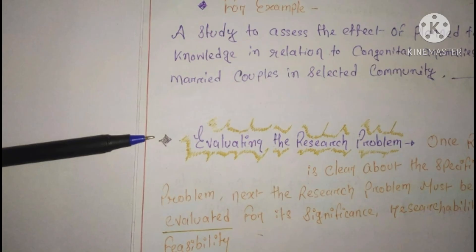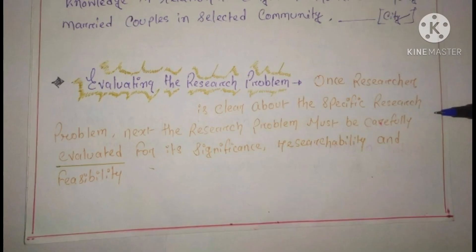The fourth step is evaluating the research problem. Once the researcher is clear about the specific research problem, it must be carefully evaluated for its significance, research ability, and feasibility. Now that I decided I want to do a study on newly married couples about congenital anomalies, I will evaluate whether my research will do any betterment in the profession, whether it will be achievable and successful. If the answers are positive, only then will I continue.